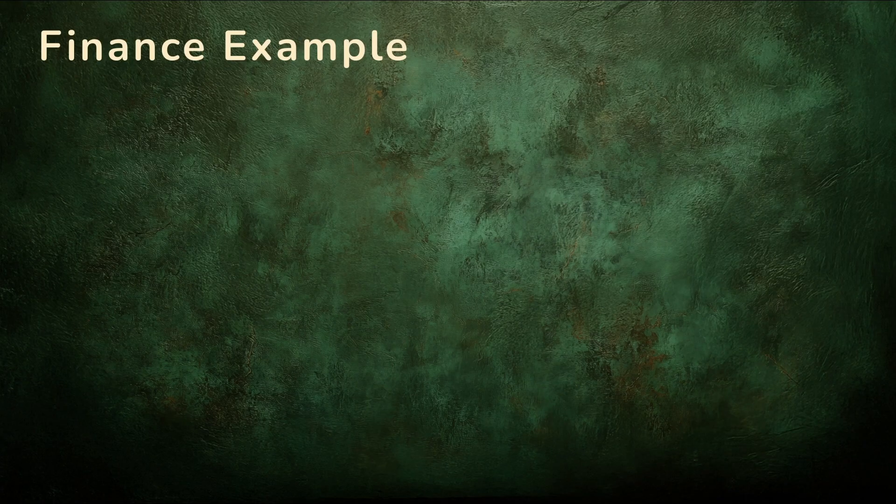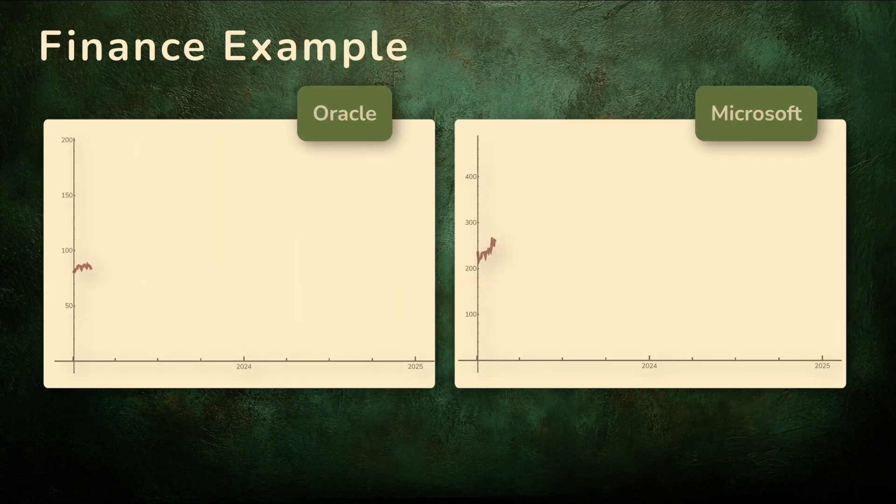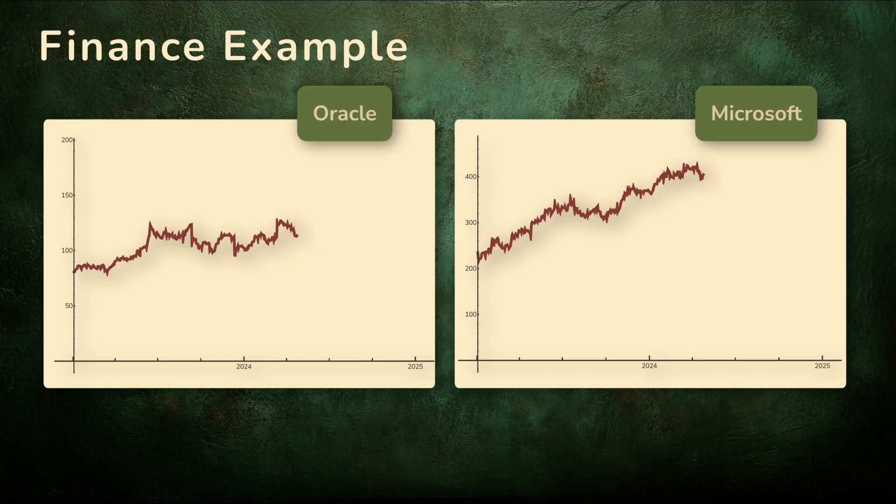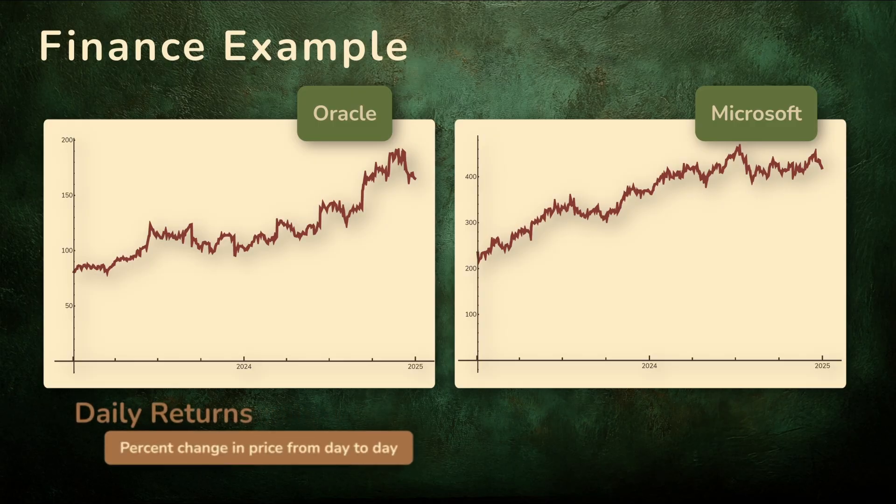In finance, two-dimensional normal distributions occur frequently. For example, observe the daily stock prices for Oracle and Microsoft. Side by side, their prices often move up or down in a similar fashion. But instead of focusing on the prices themselves, let's look at the percent change in price from day to day. What we call the daily returns.